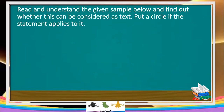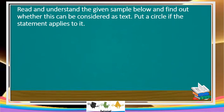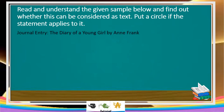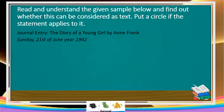Let's have an activity. Read and understand the given sample below and find out whether this can be considered as text. Put a circle if a statement applies to it. Journal Entry — Diary of a Young Girl by Anne Frank. Sunday, 21st of June, 1942.